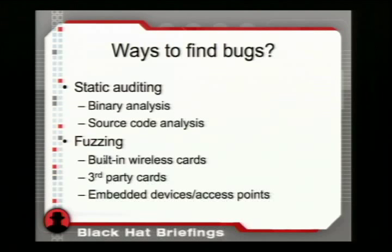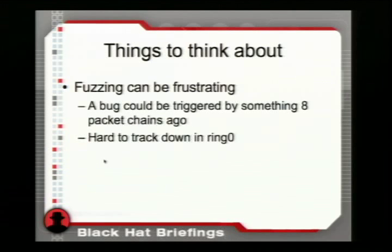We're going to talk a little about ways to find bugs. There's static auditing — binary analysis and source code analysis. The problem is most people don't have access to source code. When I've gotten stuck reverse engineering particular device drivers, it's useful to grab an open-source version of the driver and take a look at it for clues. And of course, fuzzing — that's how we found most of this. We were looking at built-in wireless cards, third-party cards, embedded devices, and access points. Fuzzing can be frustrating though — a bug can be triggered by something eight packets ago, and it's really hard to track down crashes in kernel space.